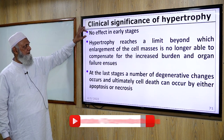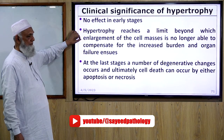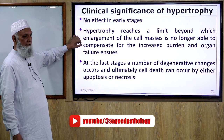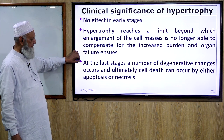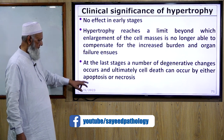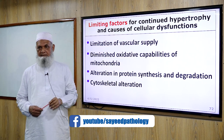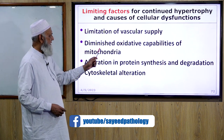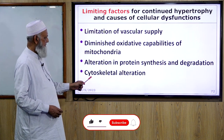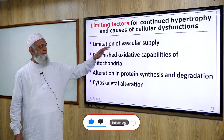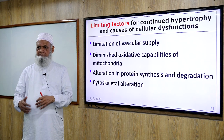Significance of hypertrophy: in the early stage there may be no effect. However, hypertrophy has a limit beyond which enlargement of the cell mass is no longer able to compensate for the increased burden, and organ failure ensues. In the late stage, a number of degenerative changes occur and ultimately cell death can occur by apoptosis or necrosis. Limiting factors include limitation of vascular supply, diminished oxidative capabilities of the mitochondria, alteration in protein synthesis and degradation, and cytoskeletal alteration.